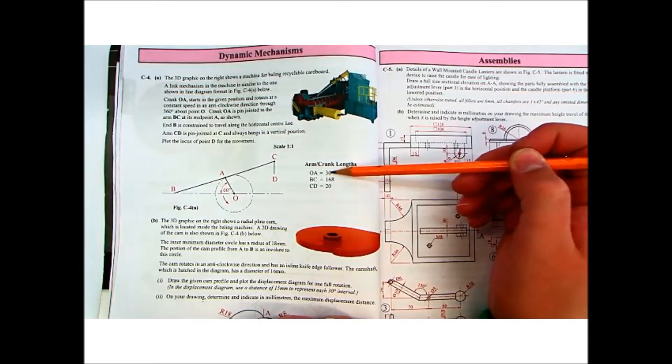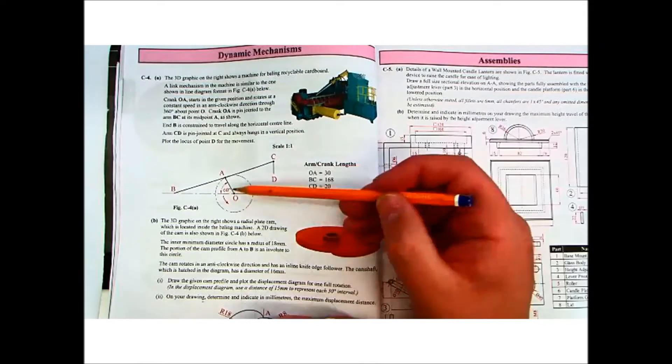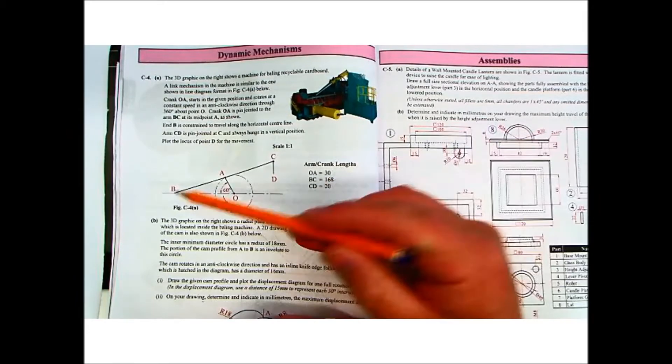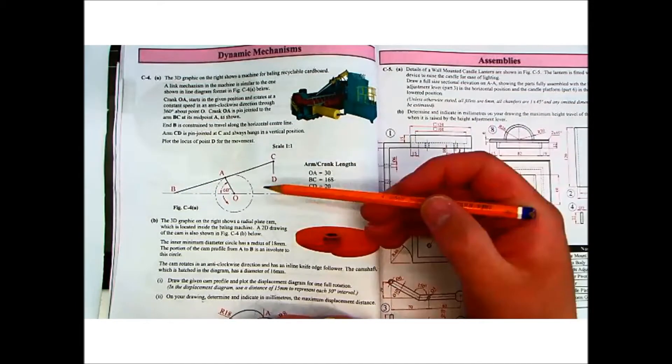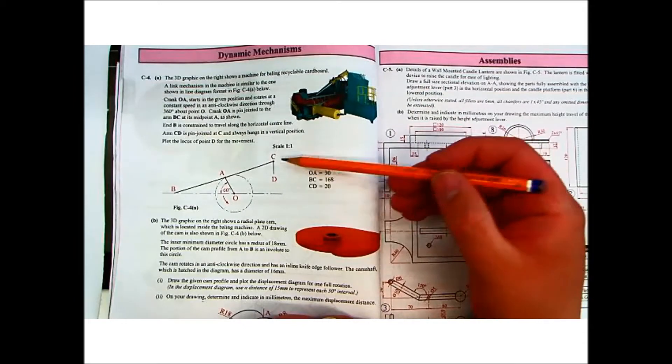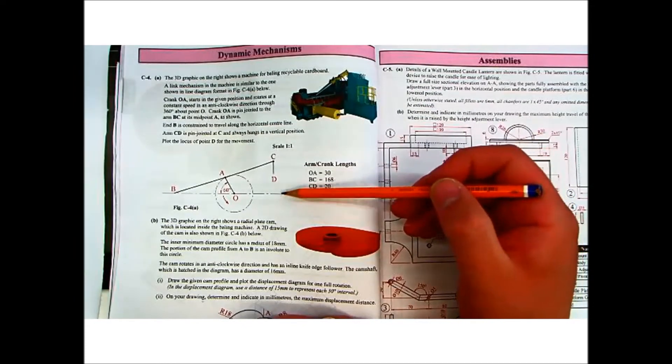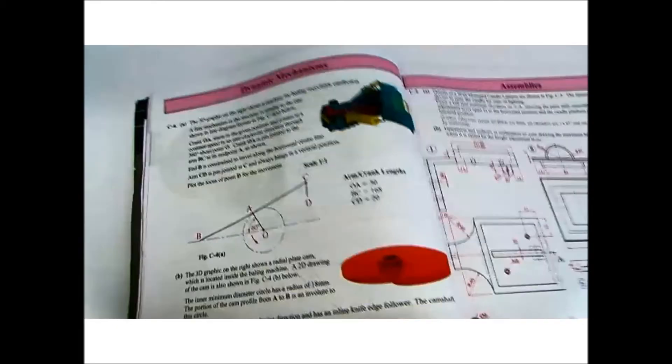Lengths. OA is 30 mil, so that's the radius of our circle. BC is 168, so that's the length from B to C. And CD is 20. So as always, you draw what's given first. And you want the locus of point D. So we're going to be drawing this to the left because the locus will be over to the right-hand side. So draw what's given.